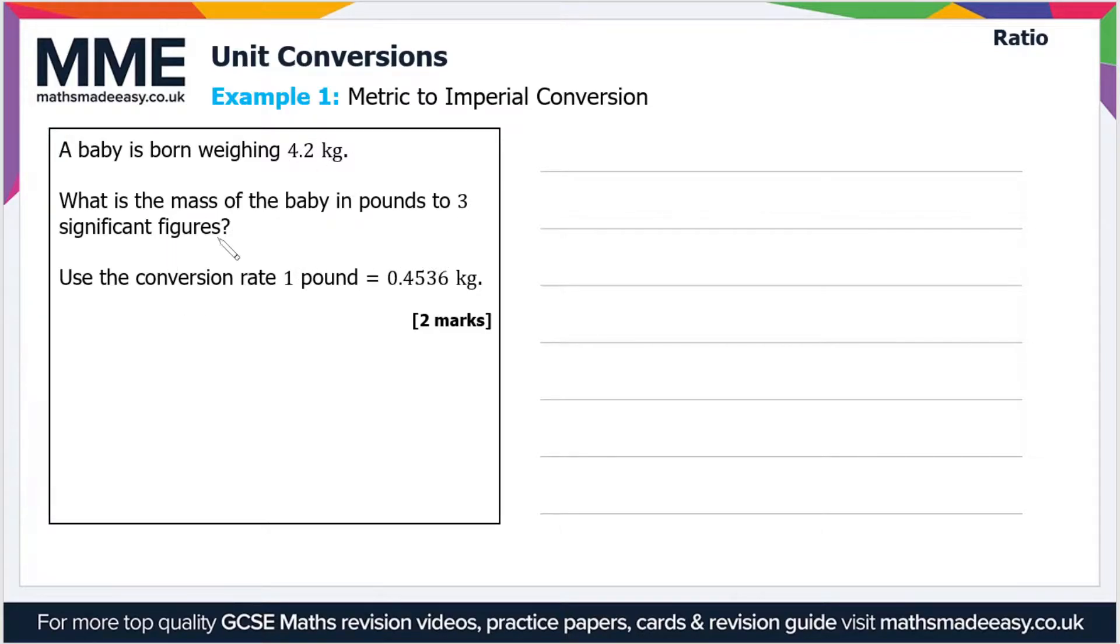We have to use the conversion rate: 1 pound equals 0.4536 kilograms. Now a quick point: anytime you get a metric to imperial conversion, you're always going to get given the conversion rate. That's because imperial unit conversions are always really weird, so you're not expected to remember them.